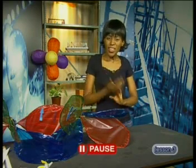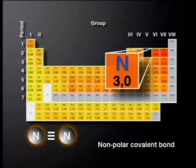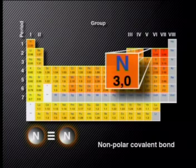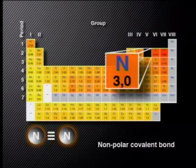Pauling's electronegativity number difference can be used for all chemical bonds, even when there are double and triple bonds present. Can you use the electronegativity number difference to confirm the nature of the covalent bonding in the nitrogen molecule? The periodic table shows that a nitrogen atom has an electronegativity number of 3.0. Both atoms of the molecule have the same electronegativity number, so the ENND is zero. The bond is therefore nonpolar covalent.